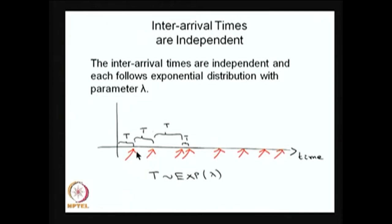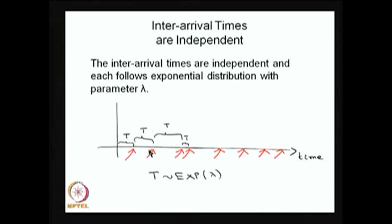Since the increments are independent and stationary, a similar argument applies to each subsequent inter-arrival time, which also follows an exponential distribution. Since increments are independent, the first inter-arrival time and the second inter-arrival time are independent. Therefore, the inter-arrival times are also independent. This means that when arrivals follow a Poisson process with rate λ, the inter-arrival times are exponentially distributed and independent.